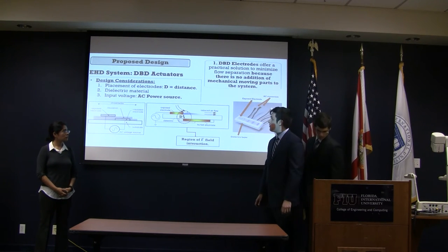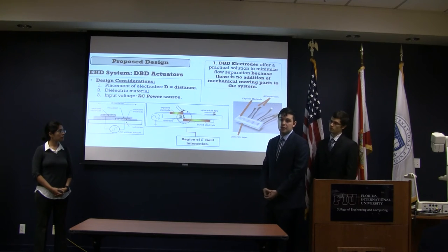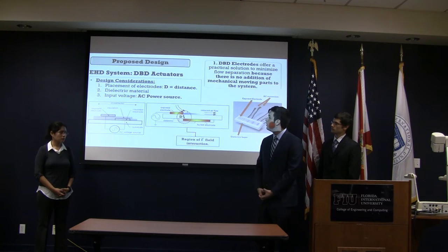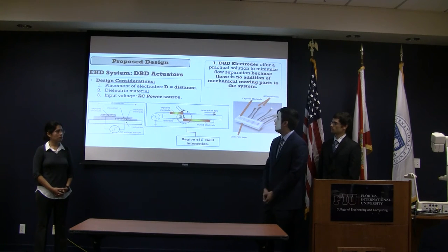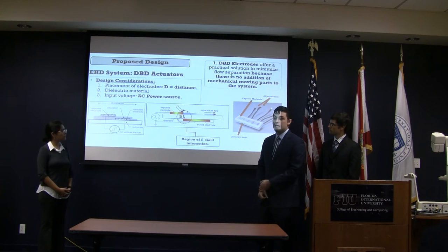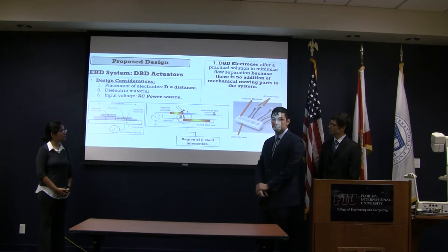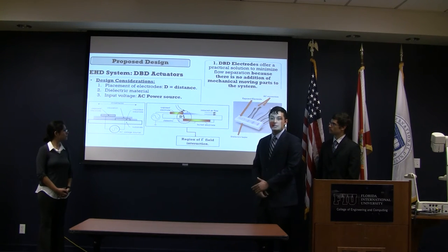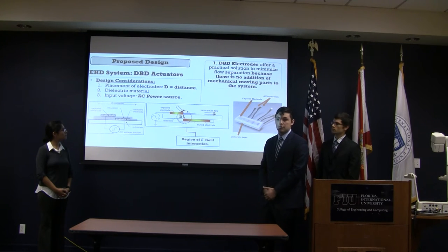What we're using to control flow separation is the concept of a plasma actuator applied to salted water to create an electro-hydrodynamic force. Some key design considerations for the actuator are: electrode placement and the distance between electrodes, since that changes the region of electric field interaction; the dielectric material connecting the electrodes, since different materials have different dielectric strengths and constants; and we'll be using an AC voltage source, so we must choose a magnitude and frequency that will give us the desired force.